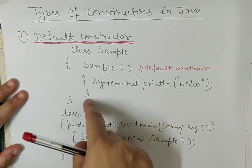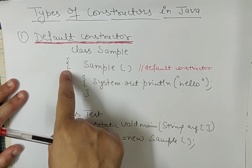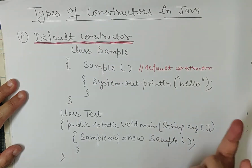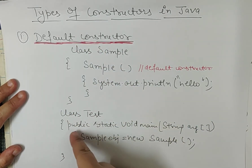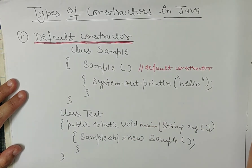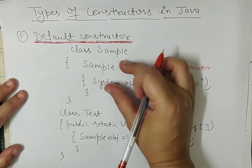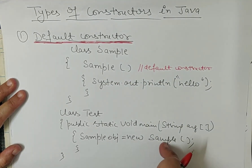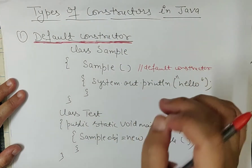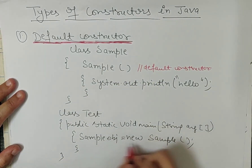This default constructor has been created and closed, just like a method is opened and closed. The key difference is that a constructor has no return type. If any constructor has no parameter list, it is called a default constructor. The default constructor is automatically called at the time of object creation.